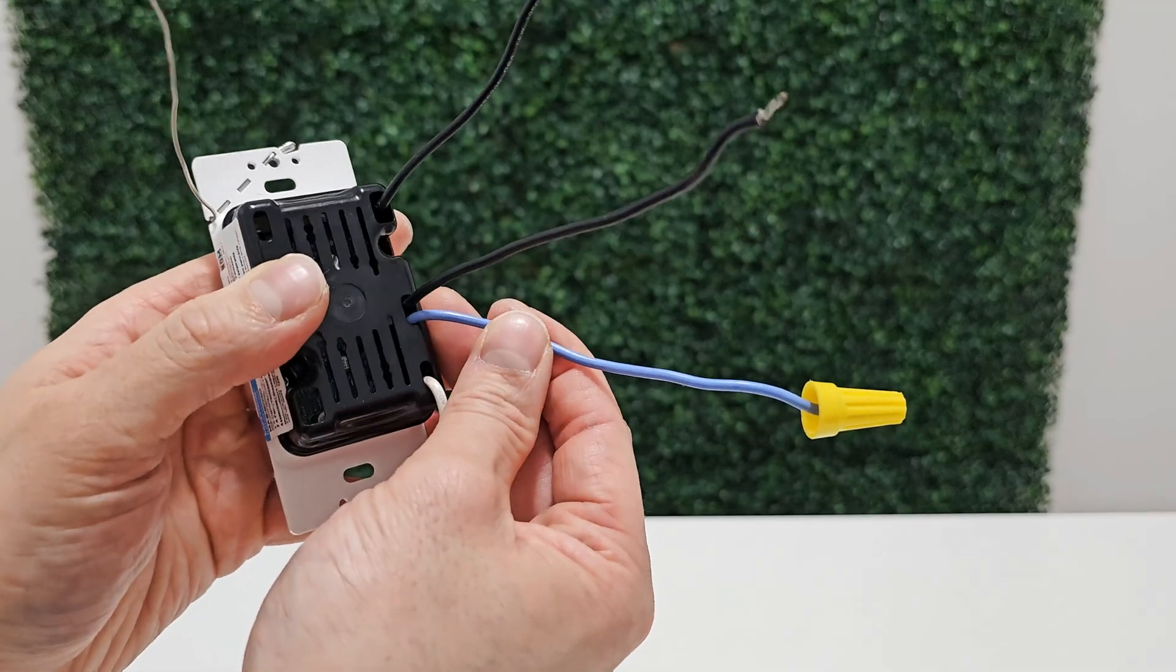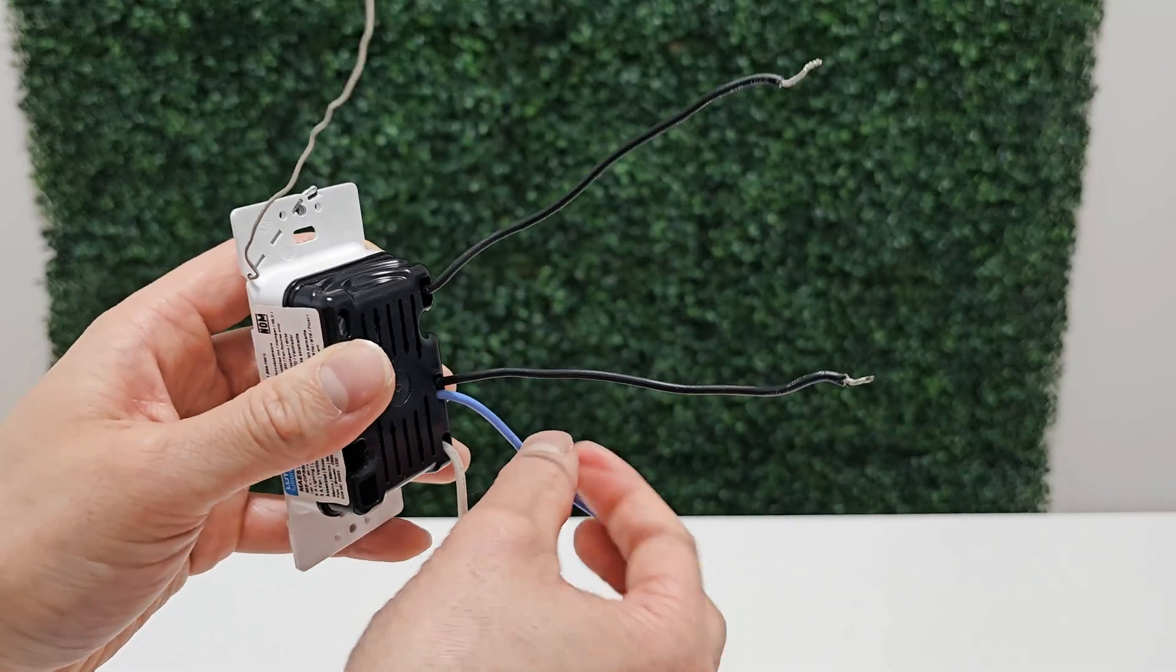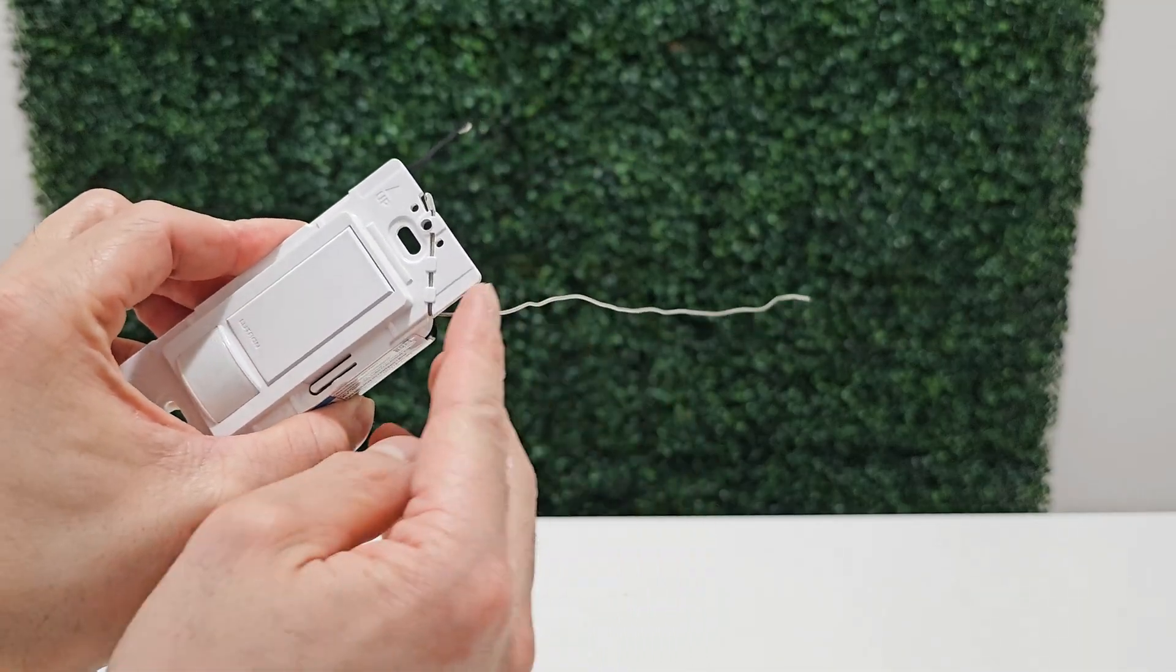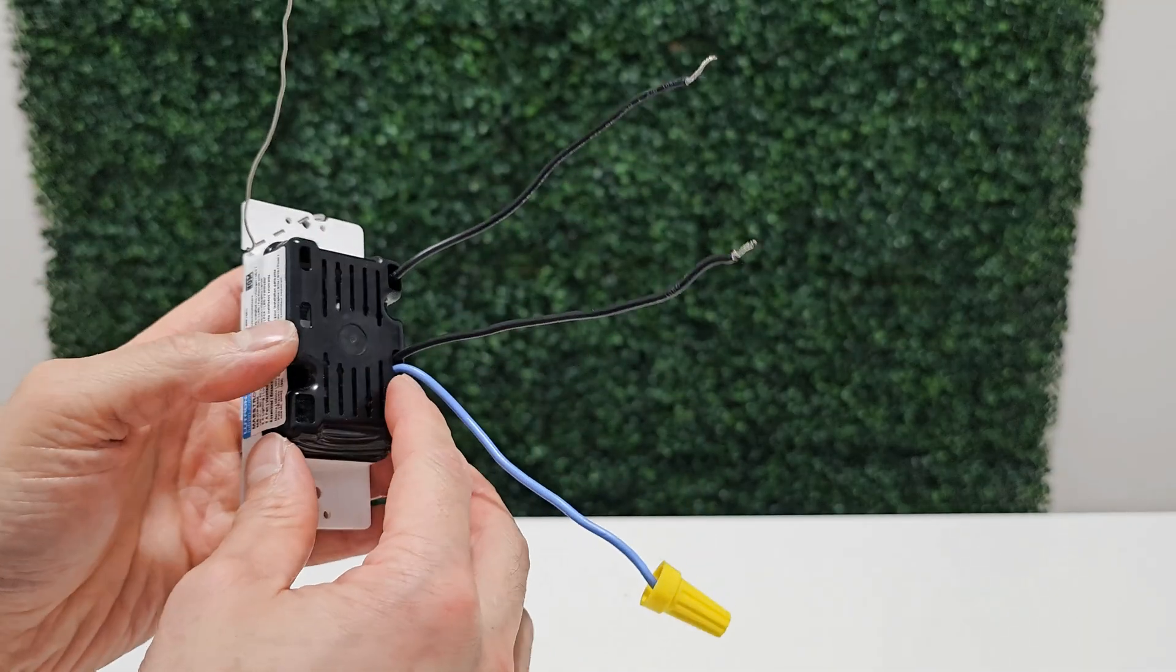This blue wire here, we won't be using. It's a traveler wire. Here we have a ground wire we won't be using. It's useless because plastic does not conduct electricity.